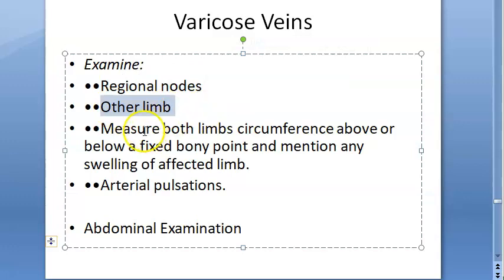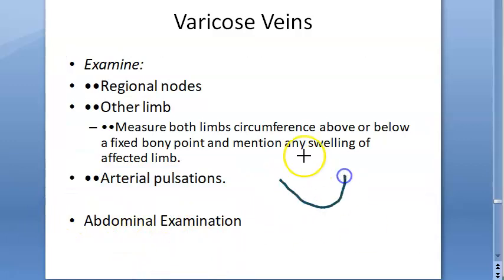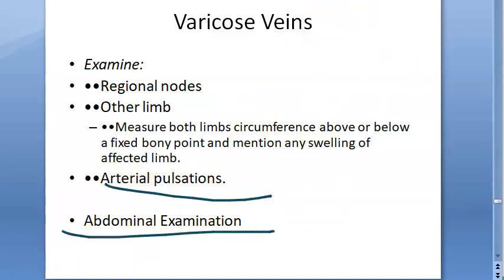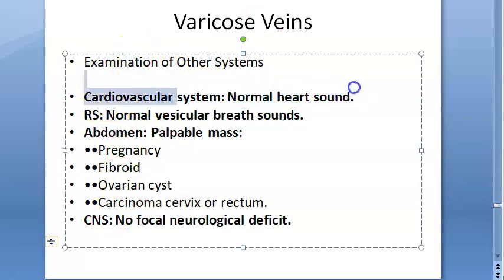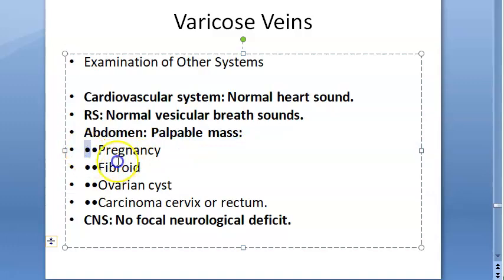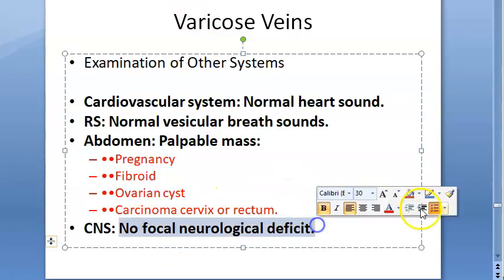Also check regional lymph nodes and measure the circumference of both limbs to document any swelling. Palpate arterial pulses: dorsalis pedis, posterior tibial, and popliteal. Perform abdominal examination — watch for a palpable pelvic mass such as pregnancy, fibroid, ovarian cyst, or carcinoma of cervix or rectum, which can be secondary causes of varicose veins. Systemic examination: cardiovascular (S1S2, no murmurs), respiratory (normal vesicular breath sounds), no focal neurological deficit.